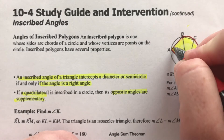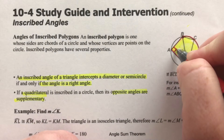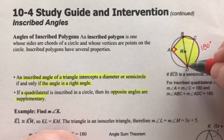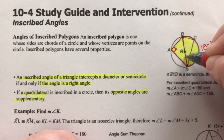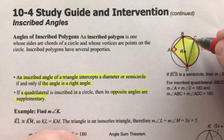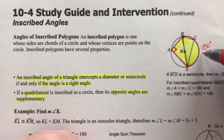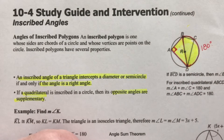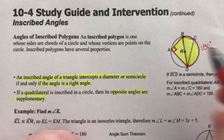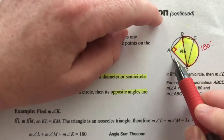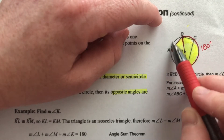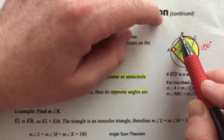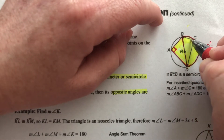The measure of this intercepted arc is 180 degrees. Using the flashlight analogy — if I stand at point A and flashlight where it hits the circle, that's the intercepted arc. If the intercepted arc is 180 and the inscribed angle is half of that, half of 180 is 90 degrees. Similarly, angle C creates this intercepted arc, which is also half the circle — 180 degrees — so angle C also has to be 90 degrees.